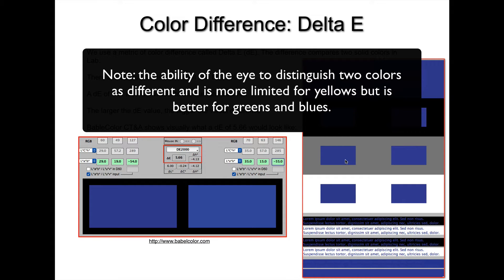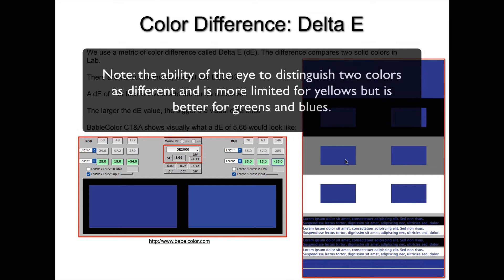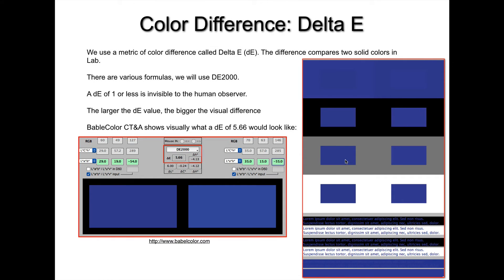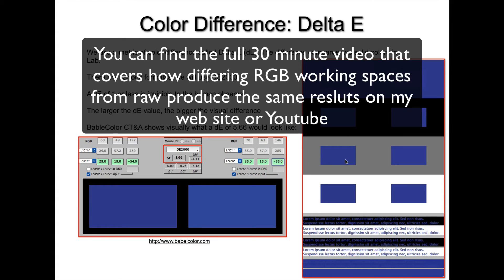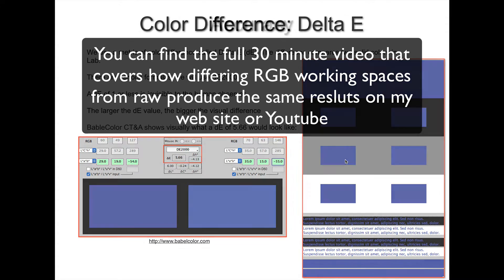If I were to use a Delta E of 1, they would look absolutely identical. This is where we need to move forward when talking about both accuracy and difference of color of solid patches, which is what we'll use to evaluate whether the statement about smaller versus larger working spaces is true.